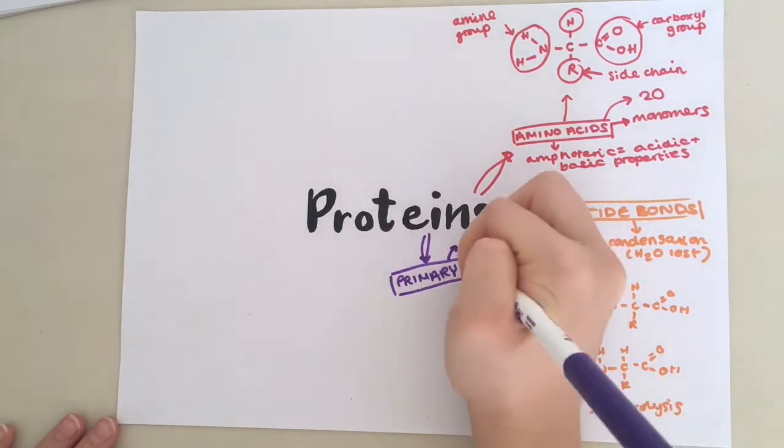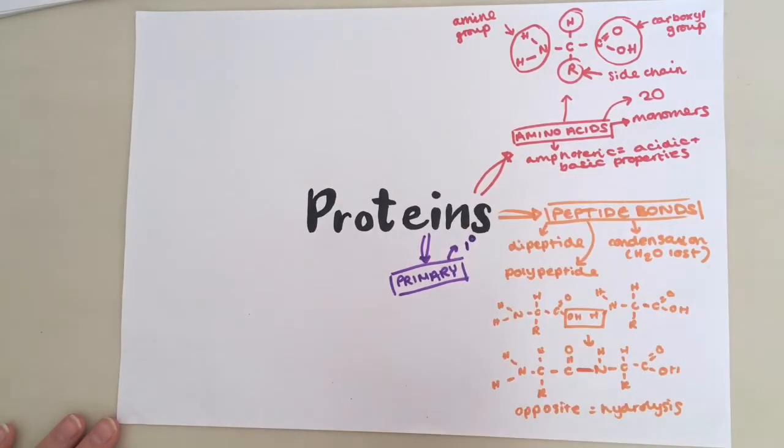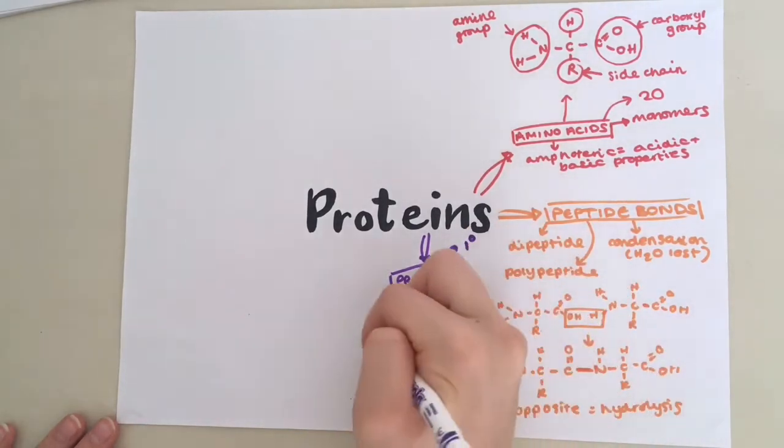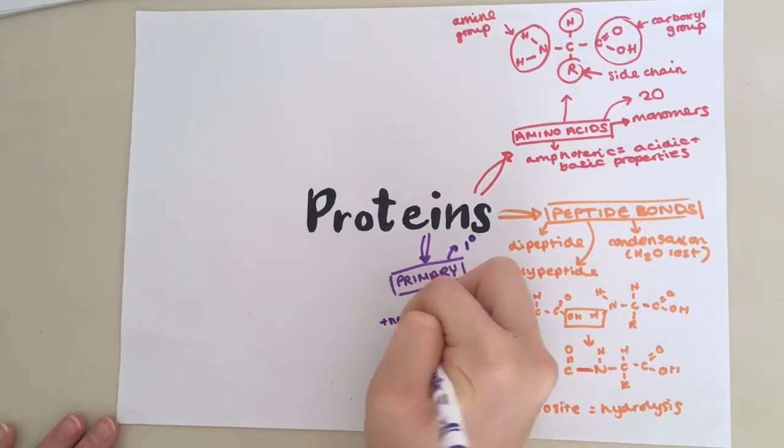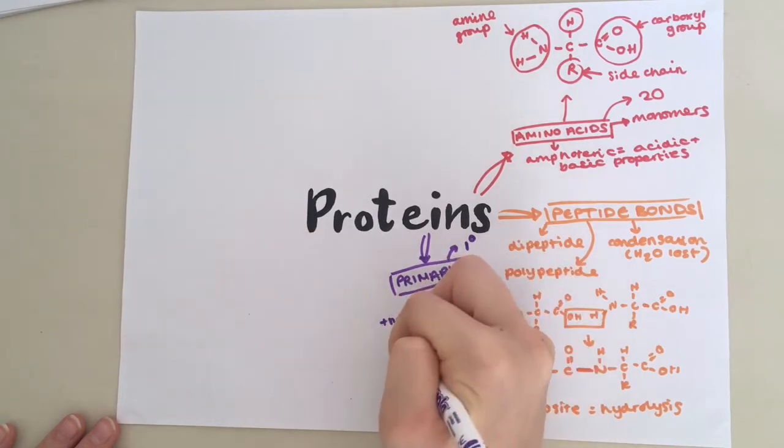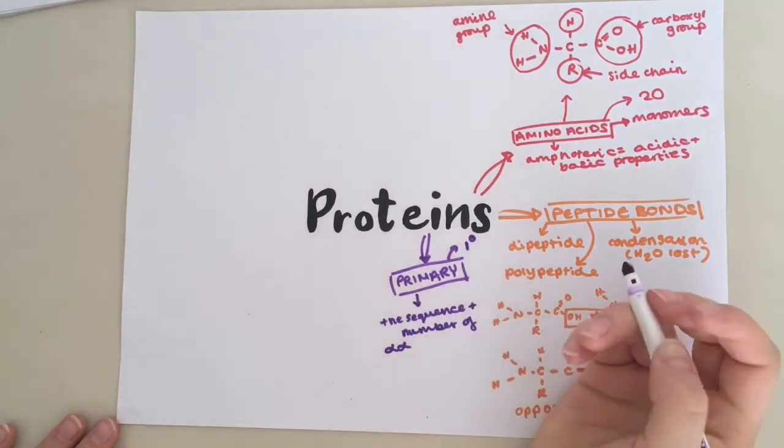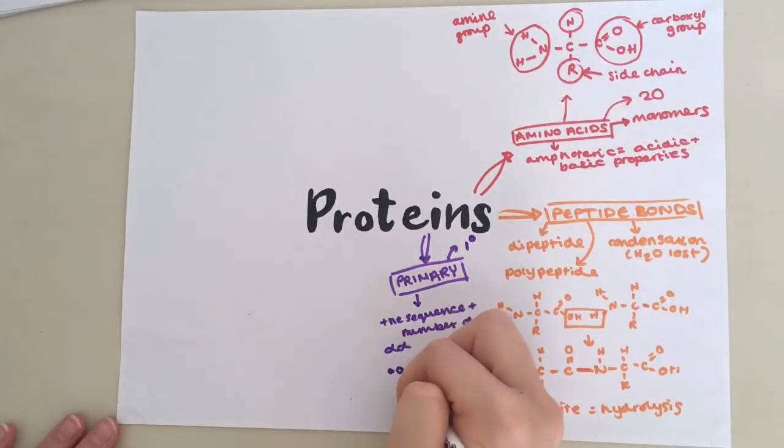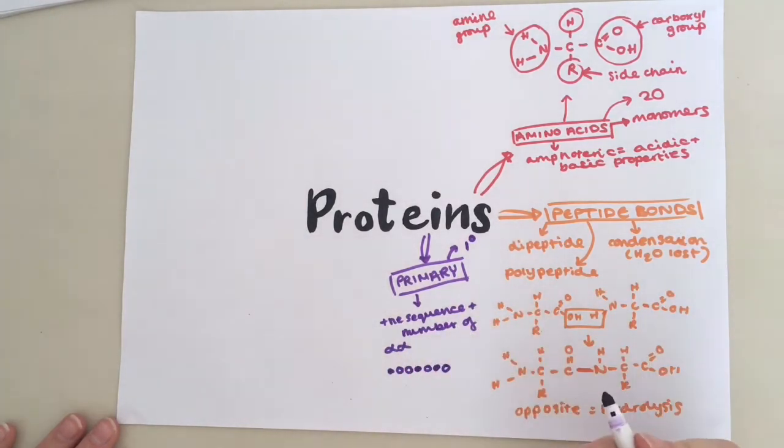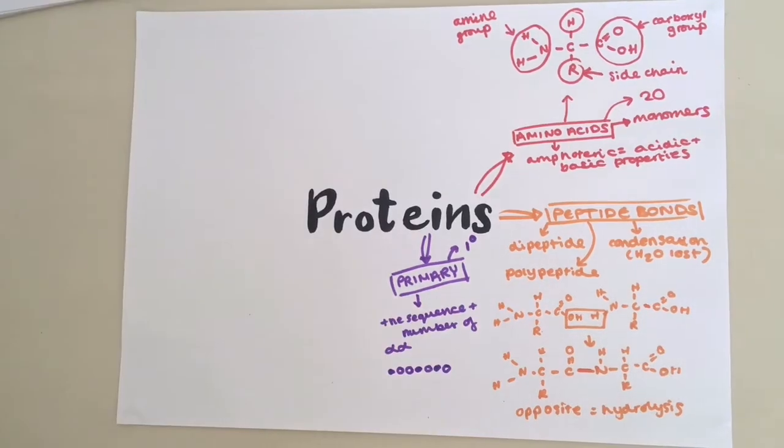You may see it written as this. Primary structure is the sequence and the number of amino acids in a poly-peptide chain. That's what primary structure is. You can have hundreds of different amino acids in a poly-peptide sequence. And this means that there is almost limitless number of possible combinations and therefore types of protein.